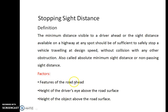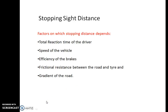The factors affecting stopping sight distance depend on the features of the road — whether it is a two-lane, four-lane, or six-lane expressway. The driver height assumed is 1.2 meters and the object height is 0.15 meters. The key factors are: reaction time of the driver, speed of the vehicle, efficiency of the brakes, frictional resistance, and gradient of the road.